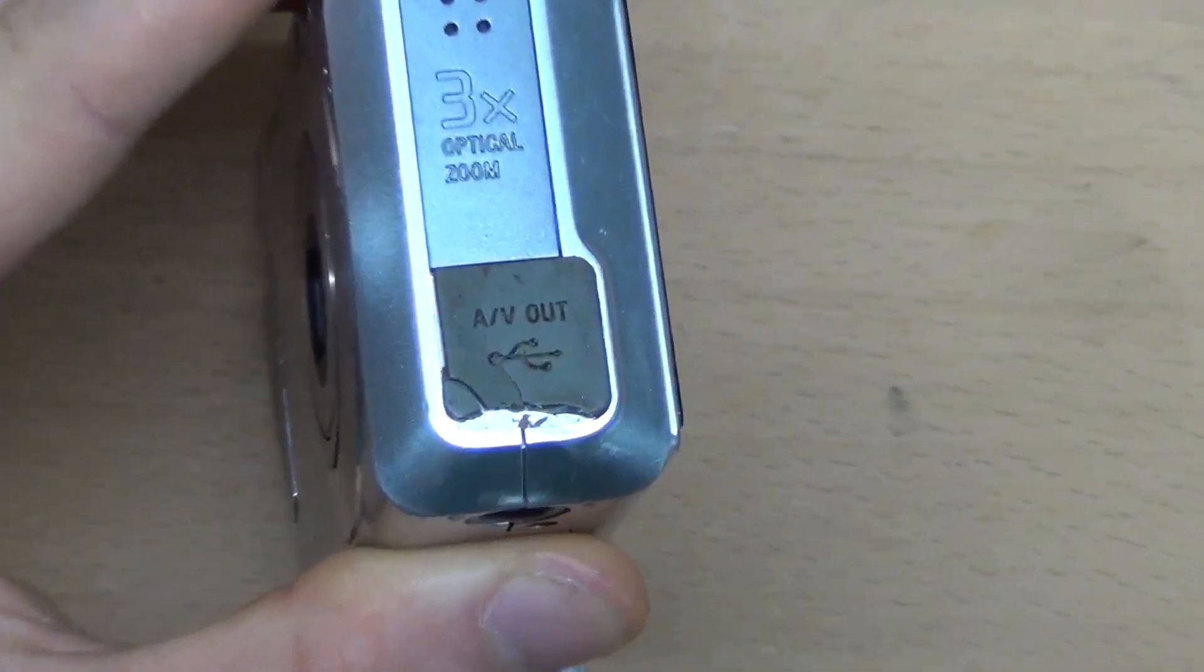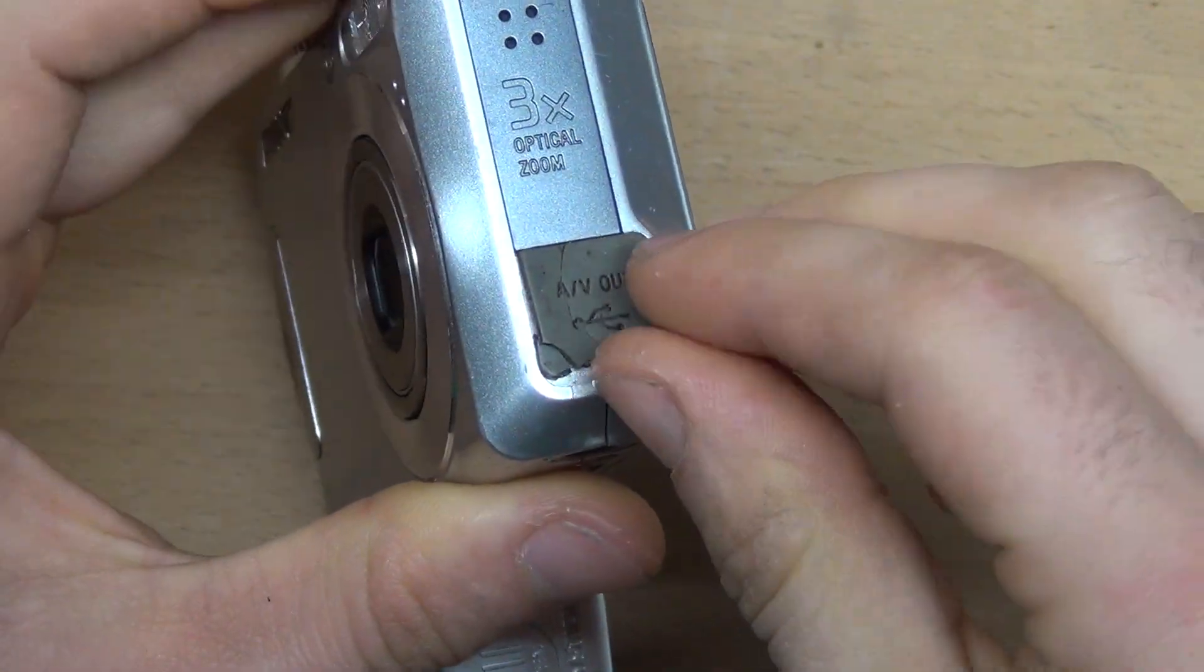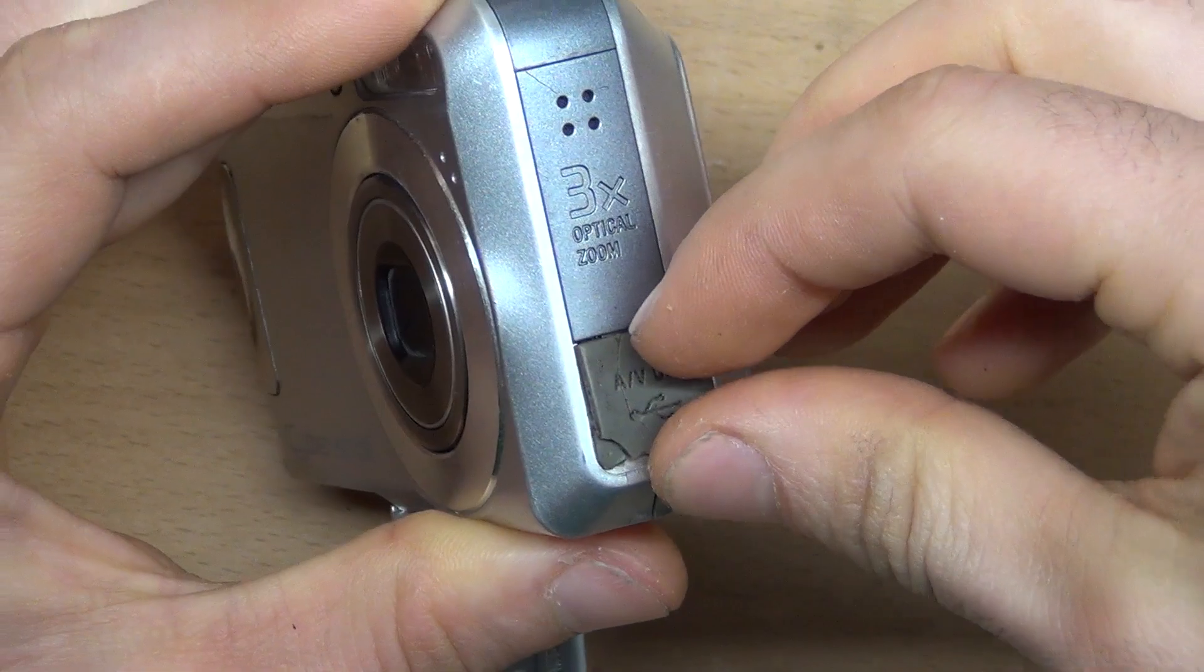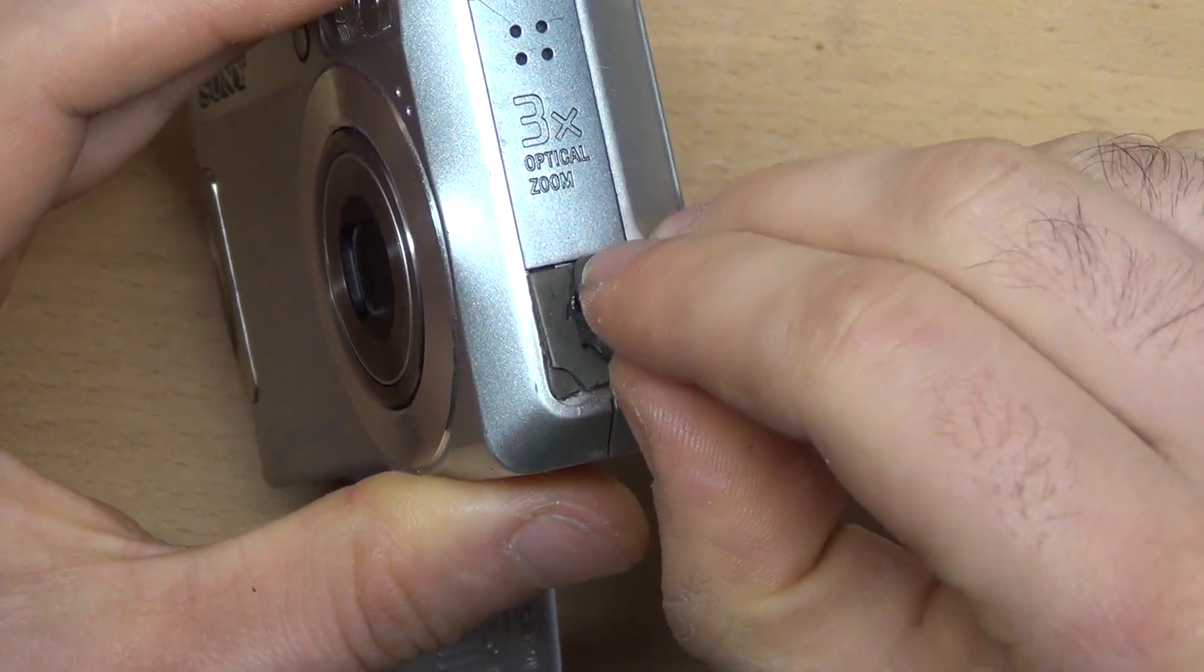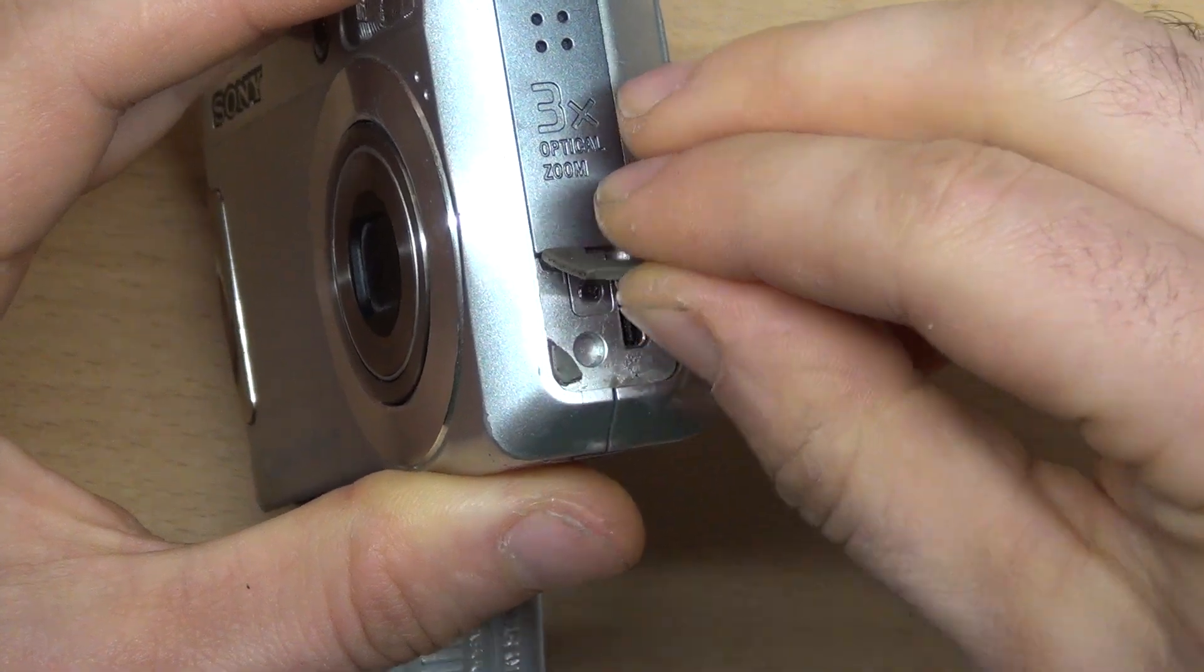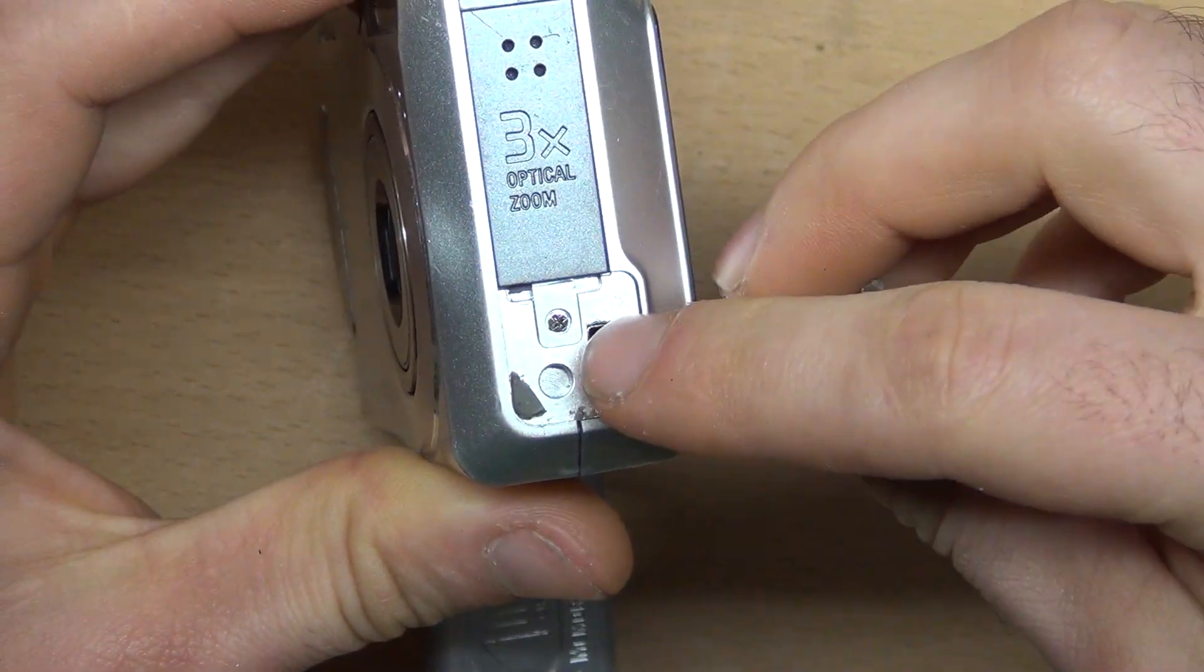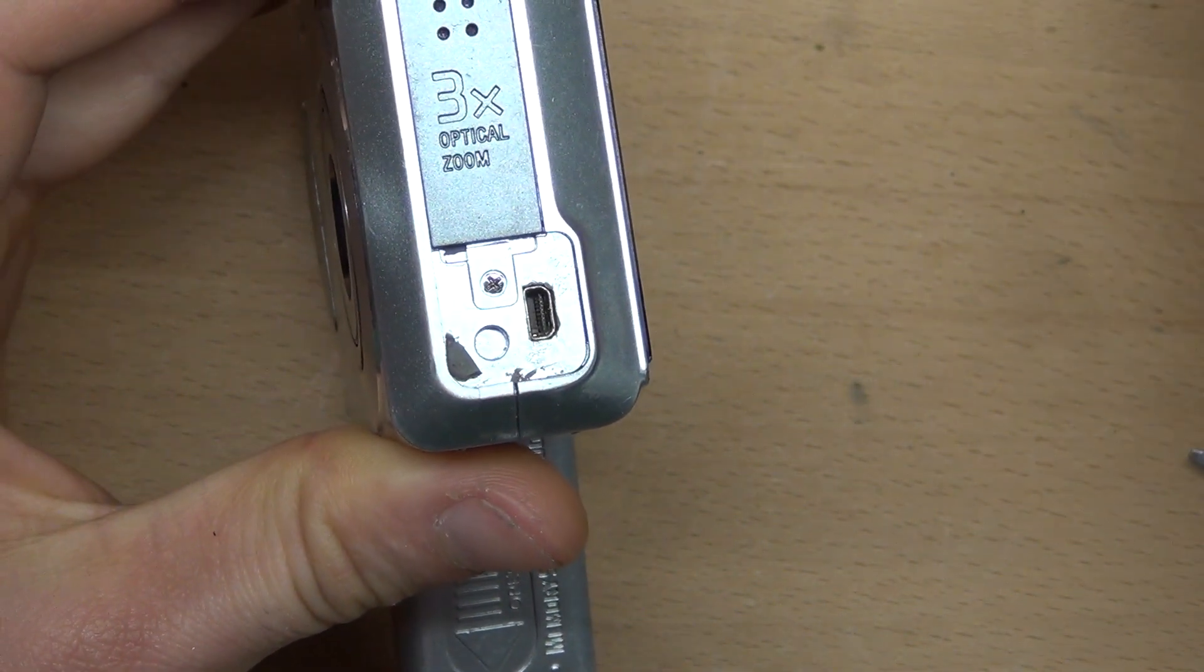There is a rubber cover here that hides the USB connector. The rubber is completely degraded, which I see on almost every old camera I found. It's not a durable method for covering connectors.